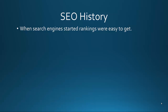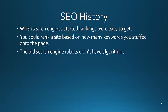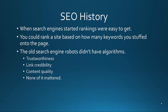When search engines started, rankings were super easy to obtain. You could rank a site based on how many keywords you stuffed onto the page. The old search engine robots didn't really have algorithms in place — or only smaller ones based on keywords. They weren't basing things on trustworthiness, link credibility, or content quality. None of that really mattered in the original days of SEO. You could put up a website with just about any keywords, and they didn't even have to be related to the content on that page, and it would still rank some of the time.